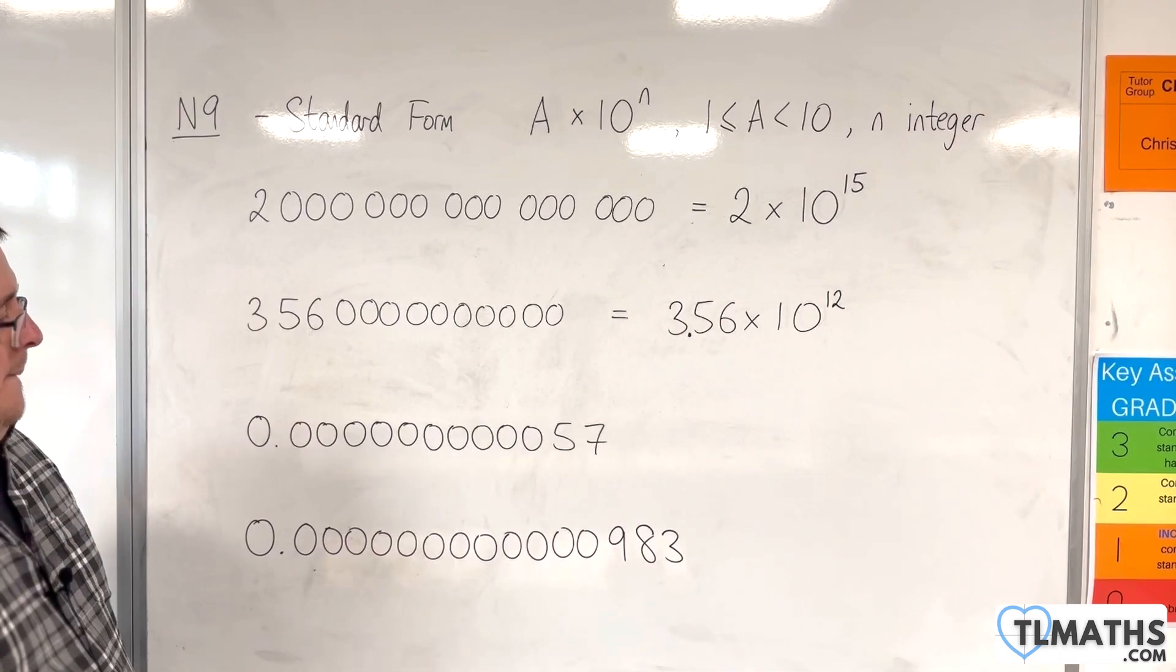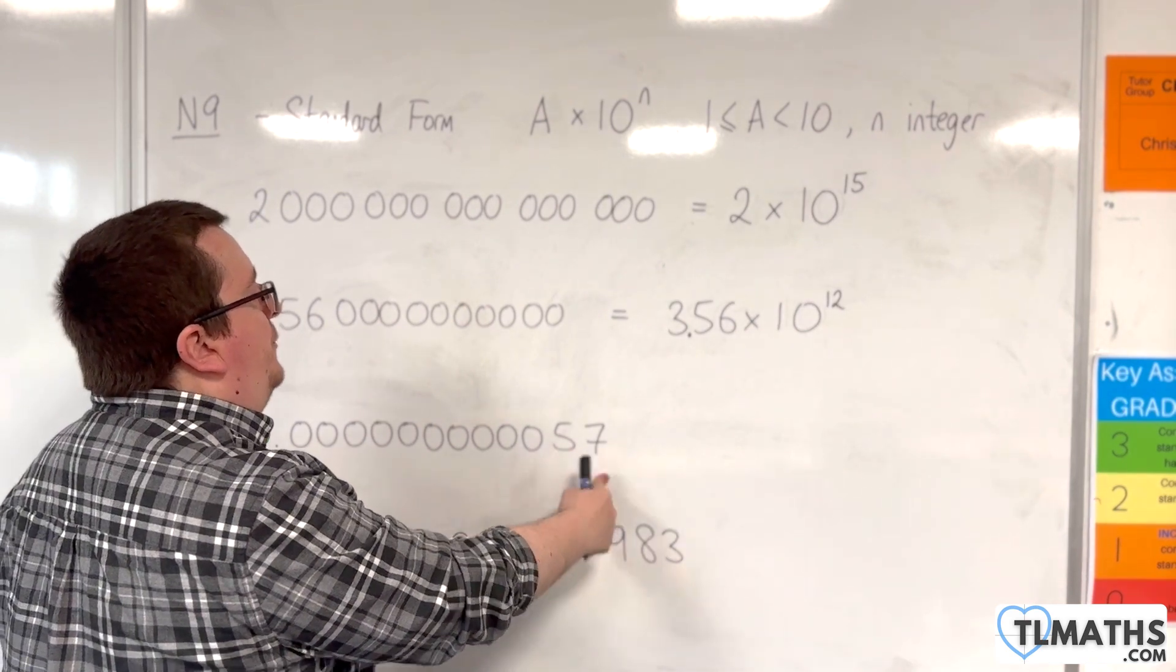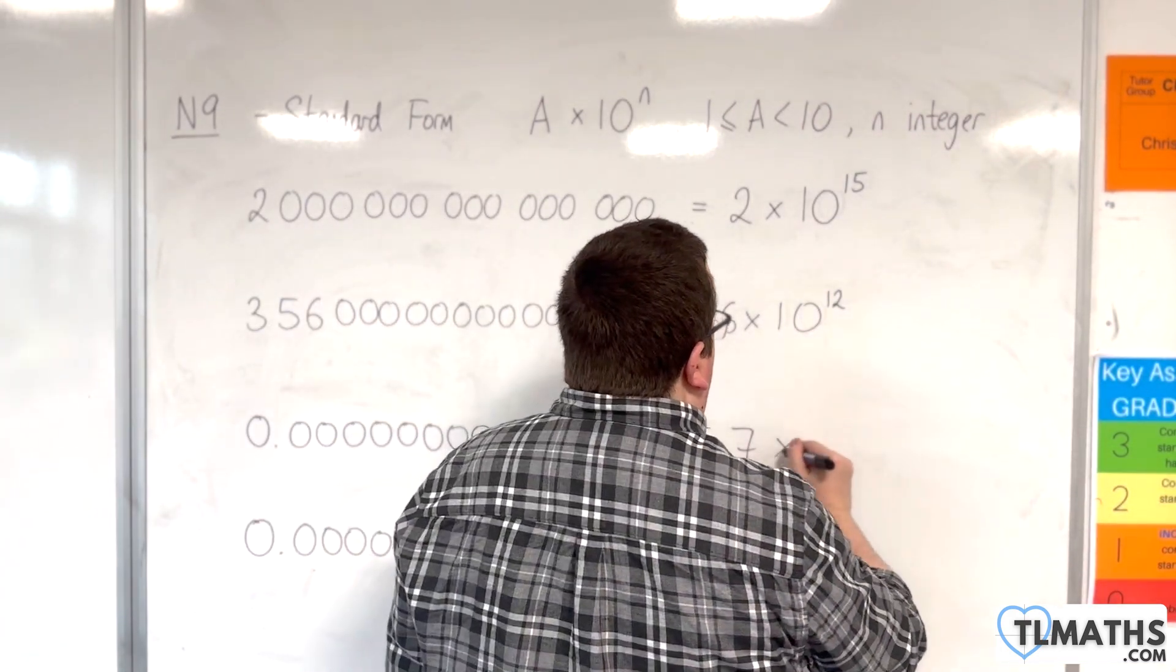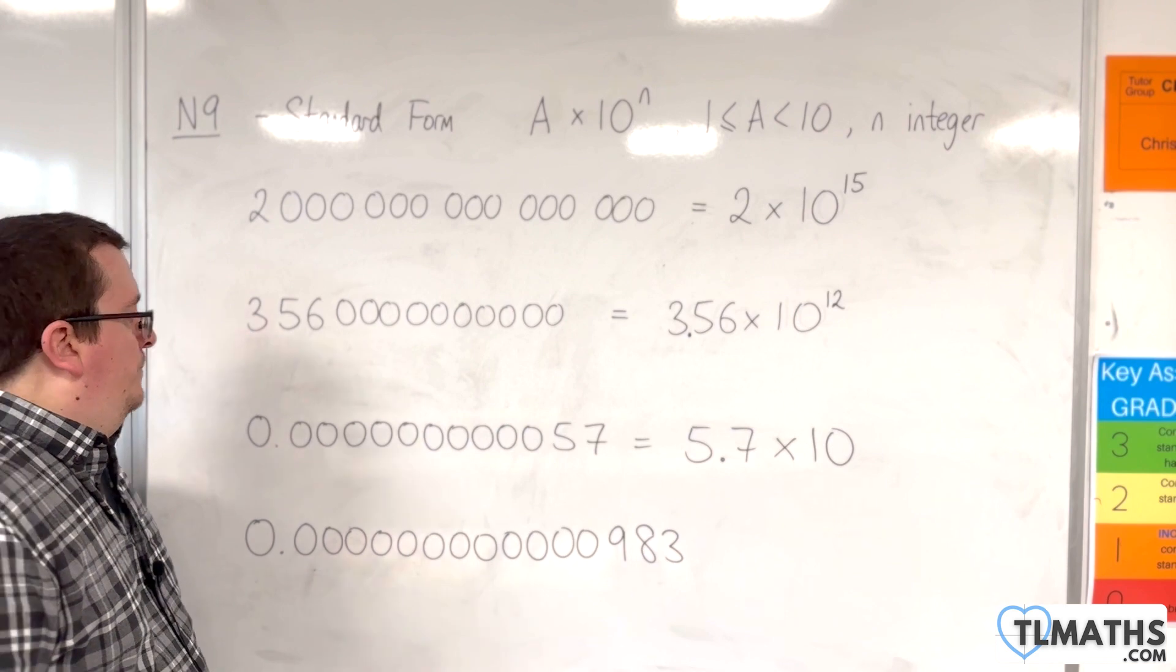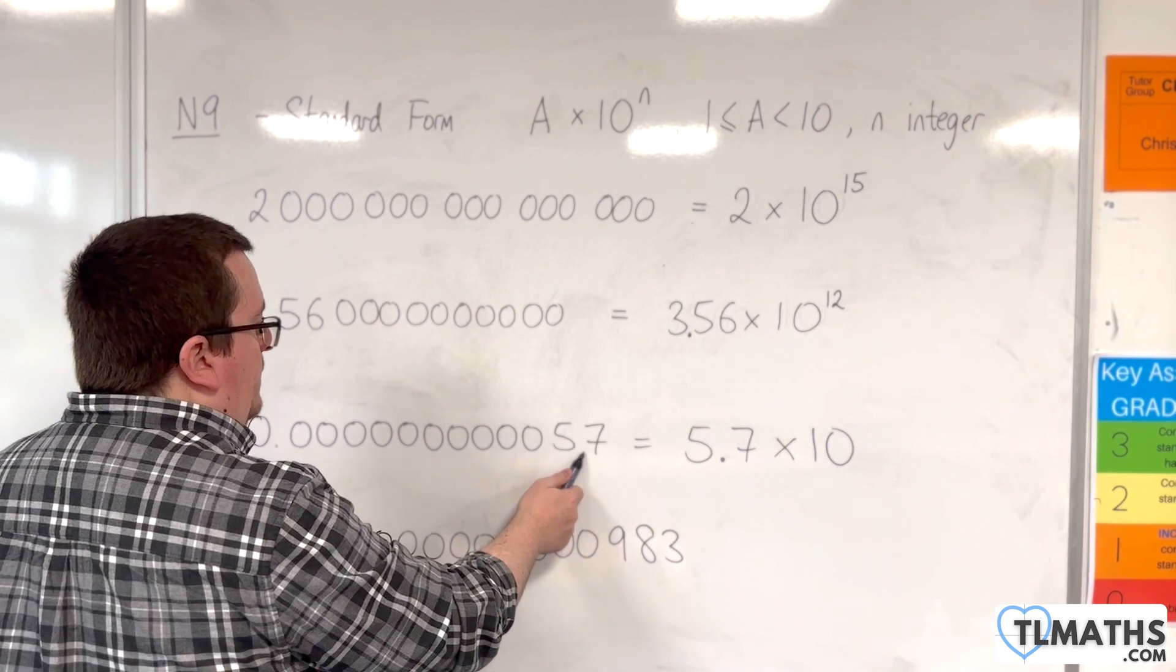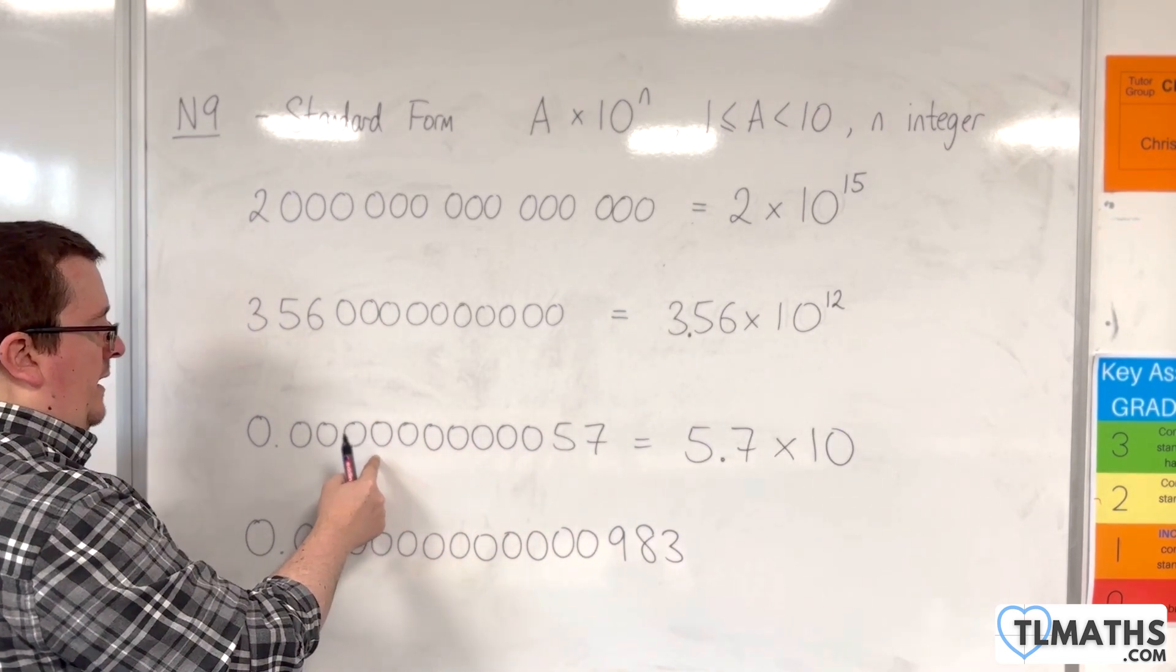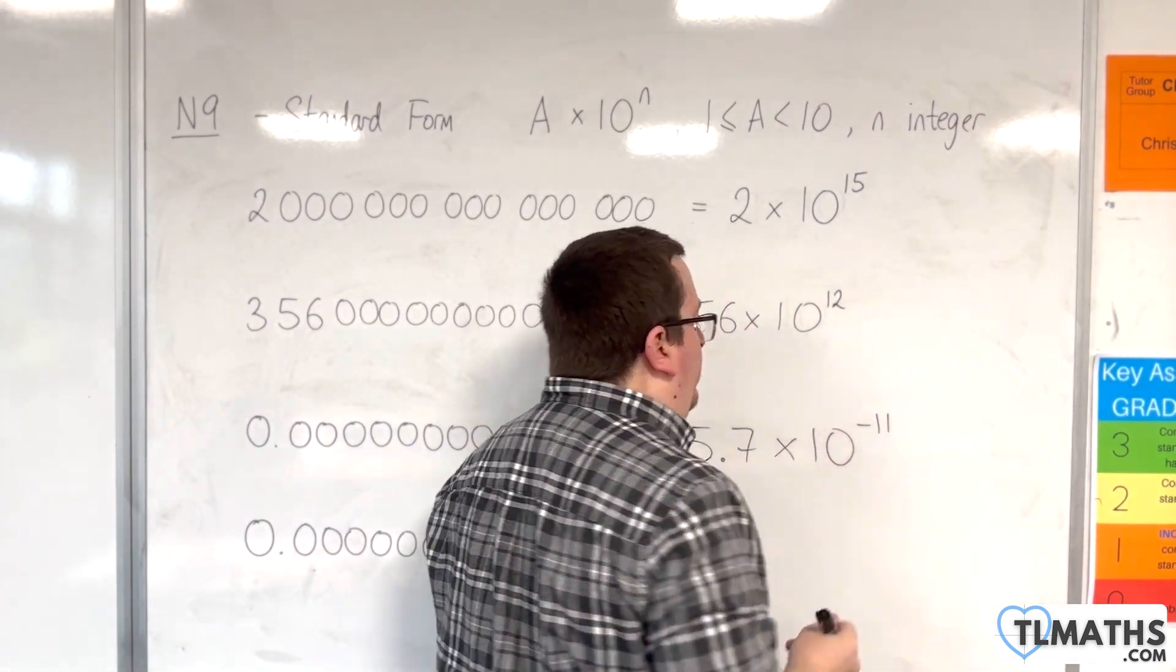The third example: we've got 0.00000000057. The number at the front needs to be 5.7, because that's between 1 and 10. But because this number is very small, we're going to need this to be a negative integer. The decimal point now needs to travel. If this was 5.7, the point here would need to move to the left: 1, 2, 3, 4, 5, 6, 7, 8, 9, 10, 11. And so this is minus 11.